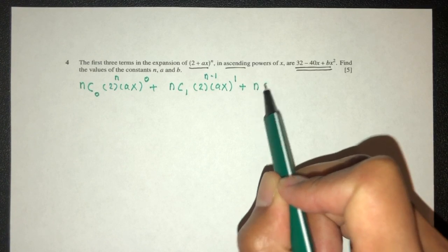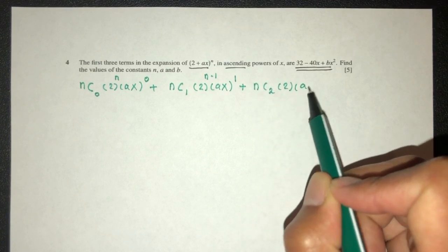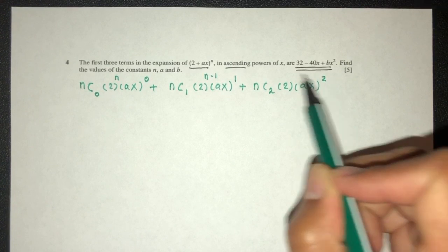And finally, the third term, n choose 2, that should be 2, ax, that should be 2 here, and then here we have n minus 2.